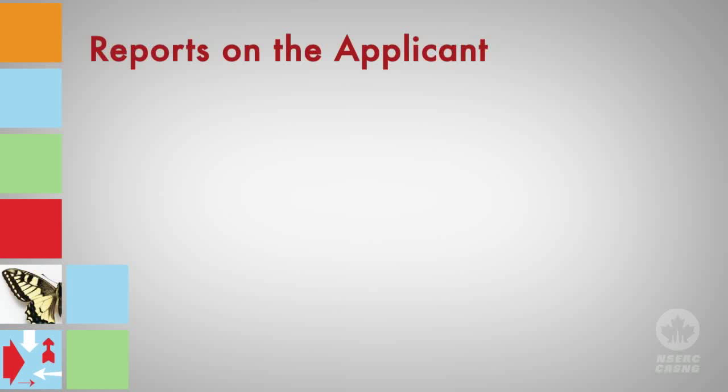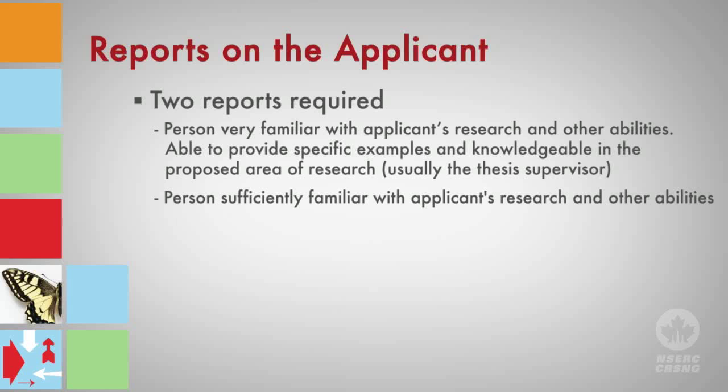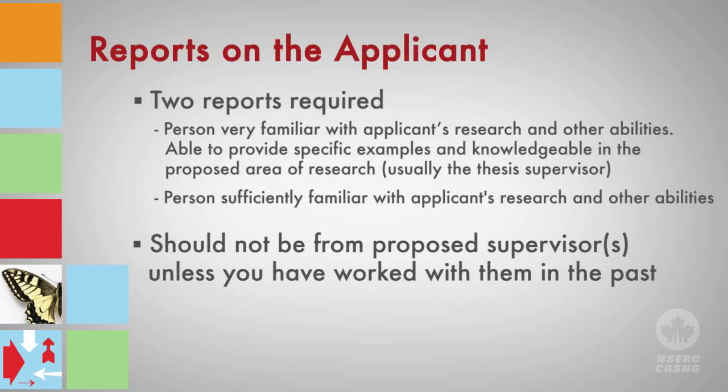Your application must include two reports on the applicant. These reports should be prepared by people who are familiar with your work, which normally includes your thesis supervisor and another academic or workplace supervisor. You should provide your referees with a realistic deadline, as well as helpful information such as details about yourself that may remind them of your research, leadership abilities, and communication skills. These reports can have a significant effect on the success of your application. Reviewers use them as a source of supplementary information and as an independent verification of other information you provide. If your thesis supervisor is not providing one of the reports, you should indicate the reason. Applicants for PGSM awards provide these on the Special Circumstances page. Applicants for PGSM awards include this information in the Contributions and Statements page.